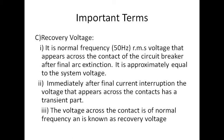Immediately after the final current interruption, the voltage that appears across the contact has a transient part. The voltage across the contact is of normal frequency, which is known as the recovery voltage. After arc extinction, when the system voltage suddenly returns to normal condition, it will take a small amount of time, and during this time you can observe some transient behavior in the cycle.